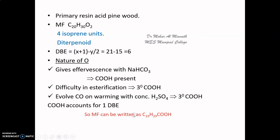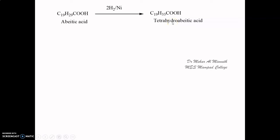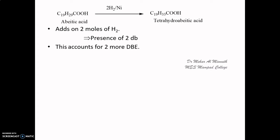We can rewrite the molecular formula of abietic acid as C19H29COOH. When abietic acid was hydrogenated it gave tetrahydroabietic acid, meaning two moles of hydrogen were used up. From C19H29 we got C19H33, so four hydrogen atoms were added, implying abietic acid has two double bonds. This accounts for two more double bond equivalences, giving us three total out of six.